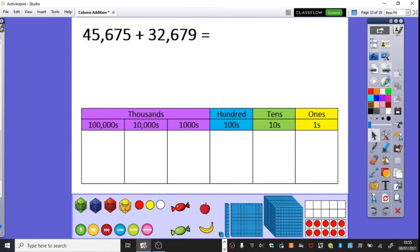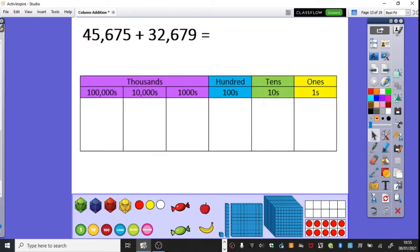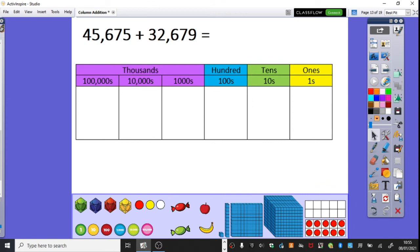So let's have a look at the first example. I am actually going to do this into the place value grid just so we can ensure that we are lining up our columns really carefully.